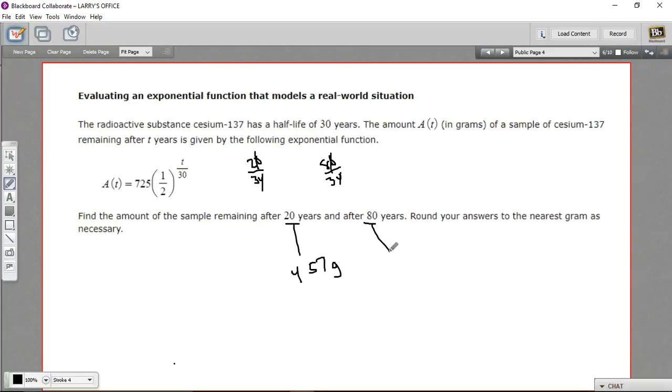So after 80 years, we only have 114 grams. And if you think about that, one, two, and a little more half-lives have passed. So you'd cut this in half. You'd cut it in half again, and then take a little bit more away. That makes sense that we're at about 114 grams.